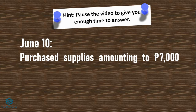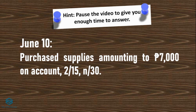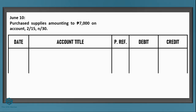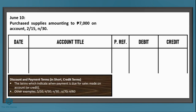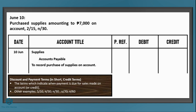On June 10, Brainwash Laundromat purchased supplies amounting to 7,000 pesos on account — meaning on credit — with terms 2/15, n/30. This means you get a 2% discount if you pay within 15 days; the full price is payable within 30 days. The 15 days is called the discount period, while 30 days is the payment period. For the entry: put the date June 10, debit supplies since we received them, and credit accounts payable since it's on credit. The amount is 7,000 under debit and credit columns.